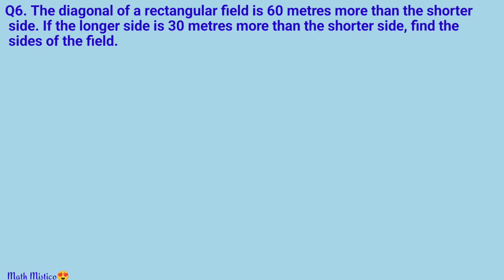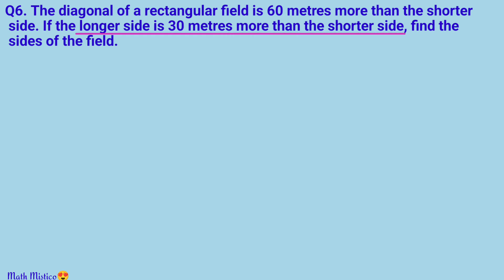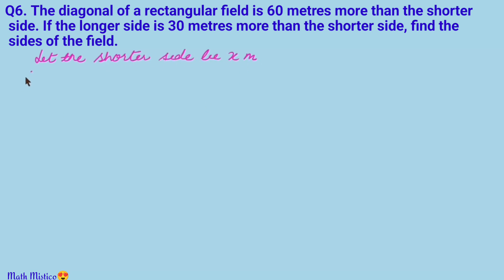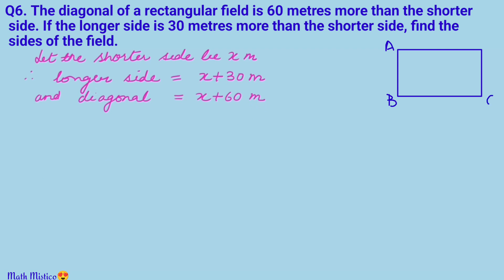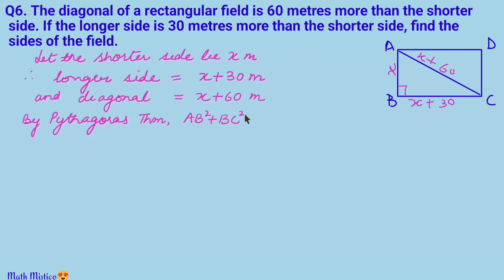Let's move on to the next question. We are given that the diagonal of a rectangle is 60 meters more than the shorter side, and the longer side is 30 meters more than the shorter side. Both values depend on the shorter side, so we take the shorter side as x. Therefore the longer side is x + 30 and the diagonal is x + 60. The diagonal forms a right triangle with the two sides, so we apply the Pythagoras theorem: AB² + BC² = AC², giving x² + (x + 30)² = (x + 60)².